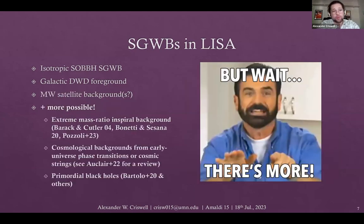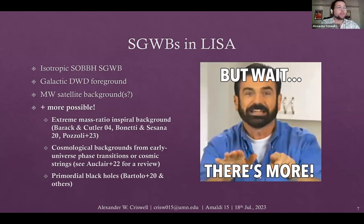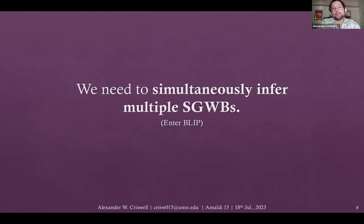There are many other possible stochastic backgrounds we may want to search for in LISA data, and in order to do that we'll have to successfully search for them in the presence of these other signals — which leads us to doing simultaneous inference across multiple different stochastic gravitational wave backgrounds.